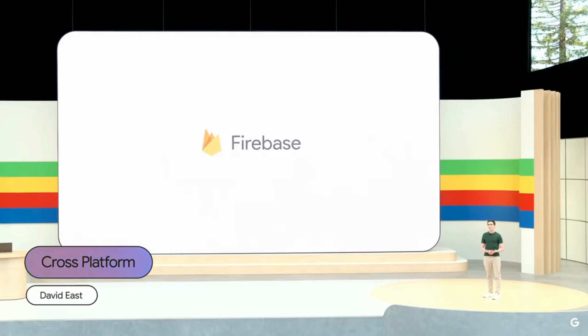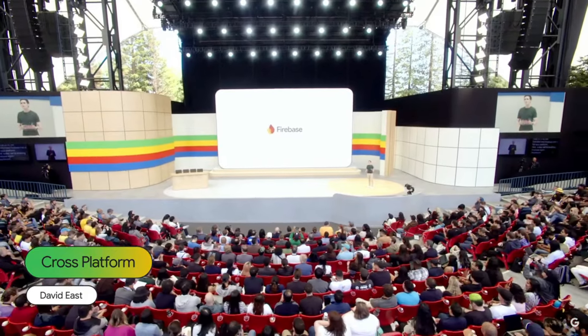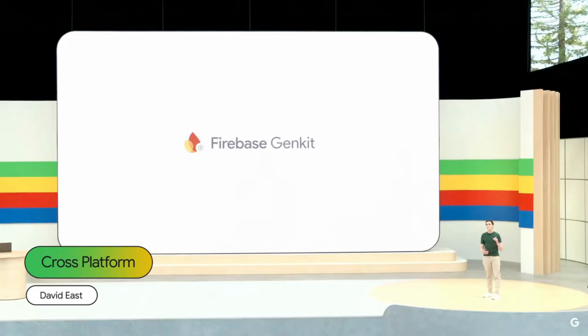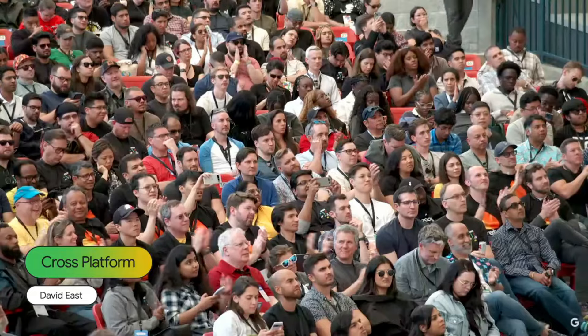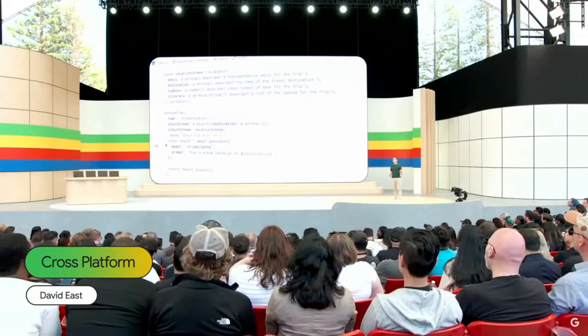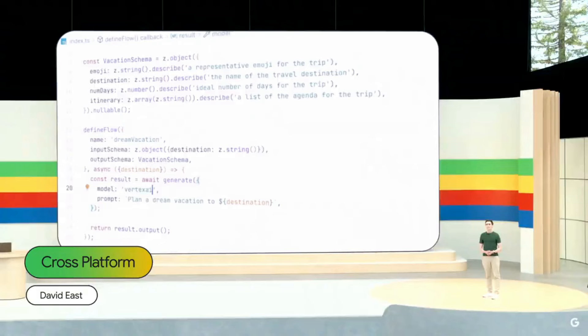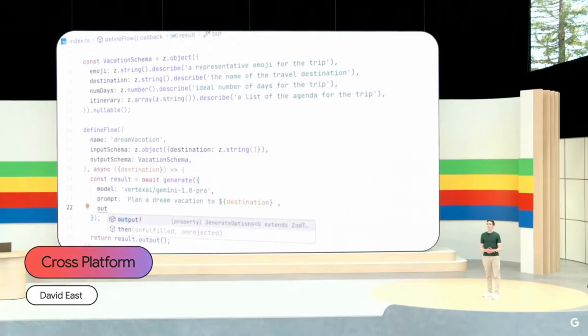Today, we're evolving Firebase again. We want to enable you to rapidly build and run AI-powered experiences in your apps across platforms. I'm excited to announce Firebase GenKit, a new AI integration framework for app developers in beta now for Node.js and with Go support coming soon. GenKit gives you a consistent API across LLMs, and trying a new model is just as easy as changing a single argument.